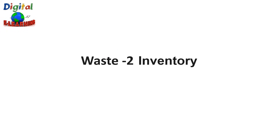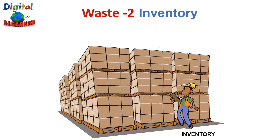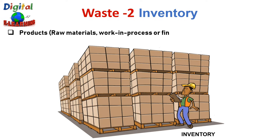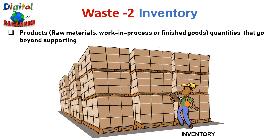The second category of waste is Inventory. It is a product — either raw material, work in process, or finished goods — in quantities that go beyond supporting the immediate need. This excessive inventory is often the result of companies holding just-in-case inventories, overstocking to meet unexpected demand or protect from production delays. However, excessive inventories often don't meet customer needs, don't add value, and only increase storage and disposition costs.